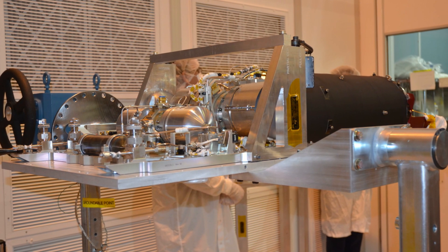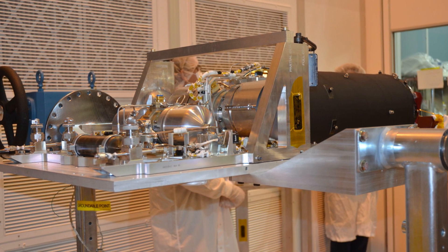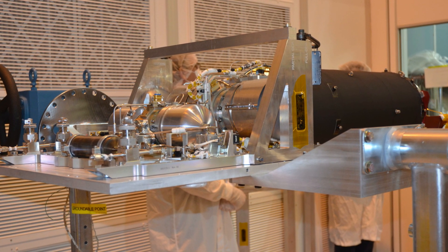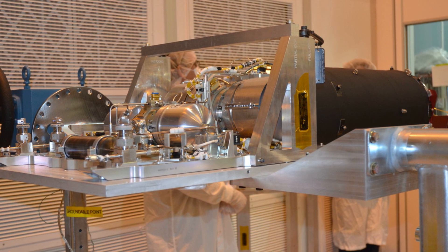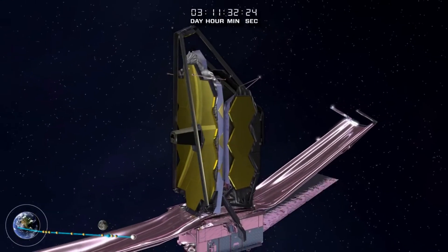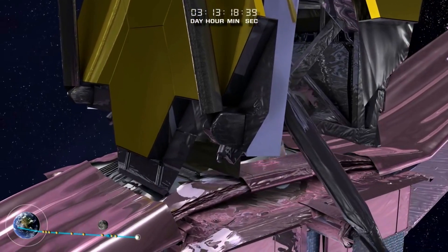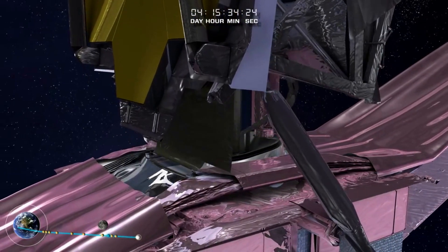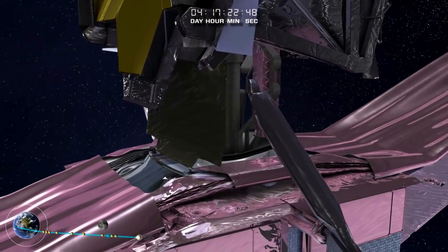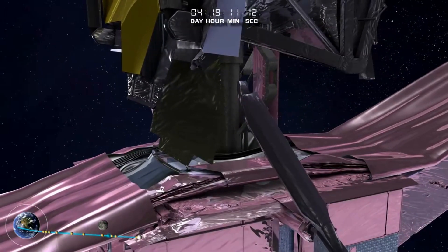The Webb-MIRI cryocooler is described as a sophisticated refrigerator with its pieces distributed throughout the observatory. The primary piece is the cryocooler compressor assembly. It is a heat pump consisting of a precooler that generates about one-fourth a watt of cooling power at about 14 Kelvin, using helium gas as a working fluid, and a high-efficiency pump that circulates refrigerant cooled by conduction with the precooler to MIRI.